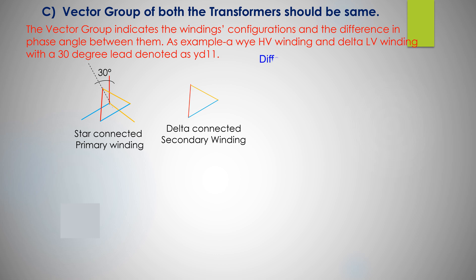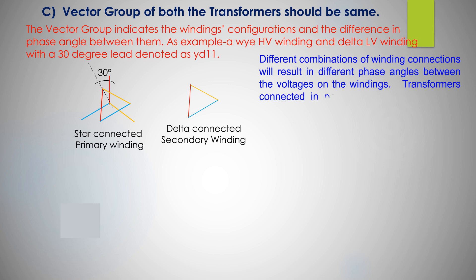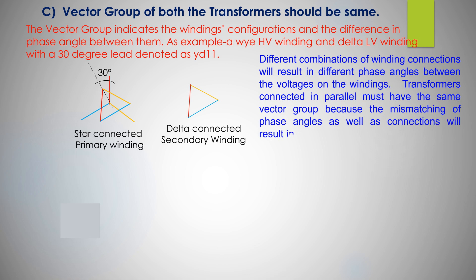Different combinations of winding connections will result in different phase angles between the voltages on the windings. Transformers connected in parallel must have the same vector group because the mismatching of phase angles as well as connections will result in circulating current and short circuit of system which have detrimental effect.